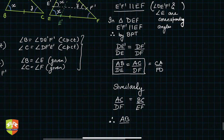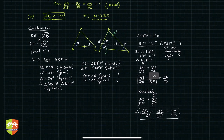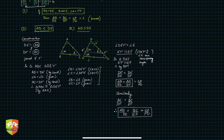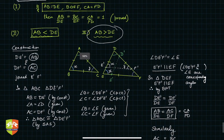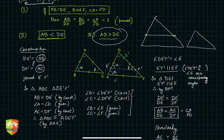Therefore AB/DE = BC/EF = CA/FD. If the three angles are correspondingly equal, then the corresponding side ratios are also equal. If AB were greater than DE instead of less, you would simply swap the two diagrams and apply the same proof — the result doesn't change.